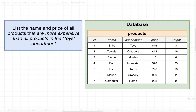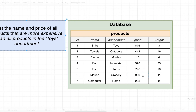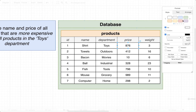To get this video started, we want to solve this query: list the name and price of all products that are more expensive than all the products in the toys department. We can probably answer this with just the products table. Looking at the data, there is only one product in the toys department right now — this first record — and it has a price of $876.